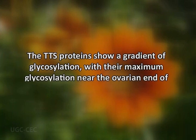In experimental studies where the levels of TTS (transmitting tissue specific) proteins were reduced, the seed set was severely reduced, with the severity correlating with the degree of downregulation of TTS protein synthesis. The reduced TTS protein levels resulted in reduction of pollen tube growth through the transmitting tissue of the pistil. The TTS proteins show a gradient of glycosylation with their maximum glycosylation near the ovarian end of the style. Thus, it is proposed that the pollen tubes grow along this gradient of increased TTS glycosylation in the transmitting tissue.